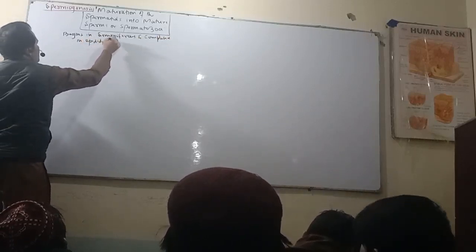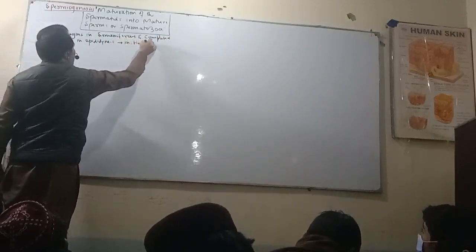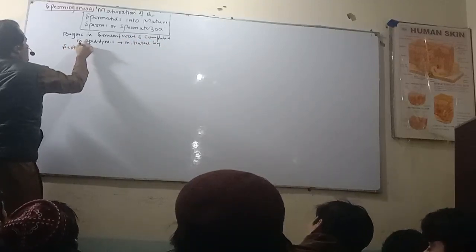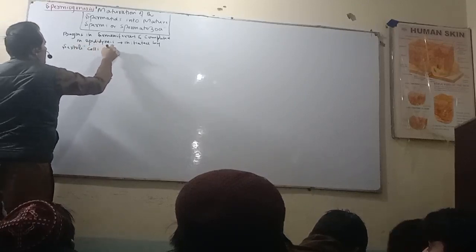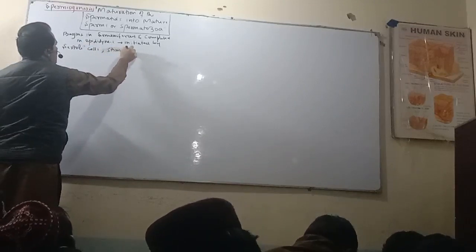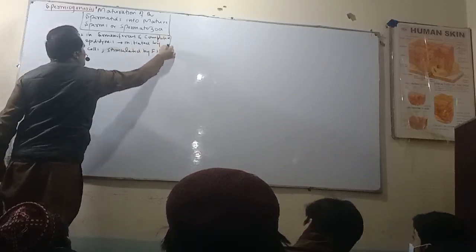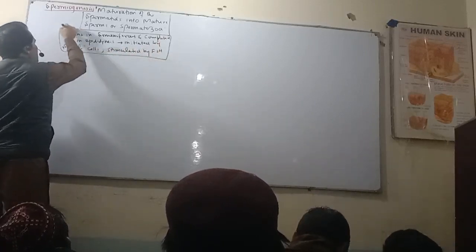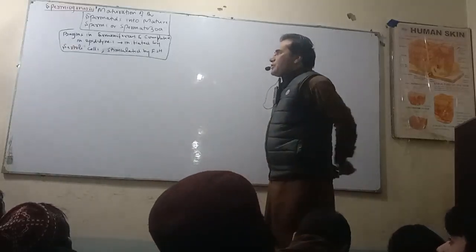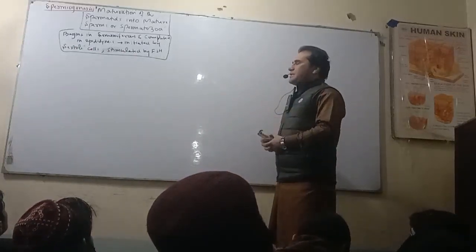This process is initiated by Sertoli cells and is stimulated by FSH. The Sertoli cells provide nourishment to the spermatogenic cells. Finally, we have mature spermatogenic cells.